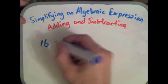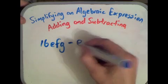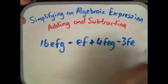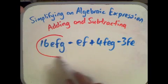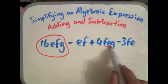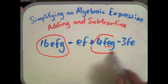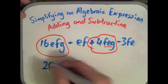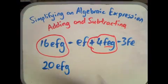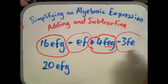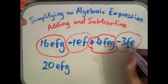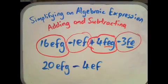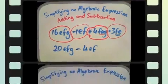Let's look at another example: 6efg minus ef plus 4feg minus 3fe. Now efg is the same as feg — just a different order — which means we do have the same term. So 6 plus 4 gives us 20efg. Then minus ef minus 3fe: same terms again, minus 1 minus 3 is minus 4ef. Simplified.